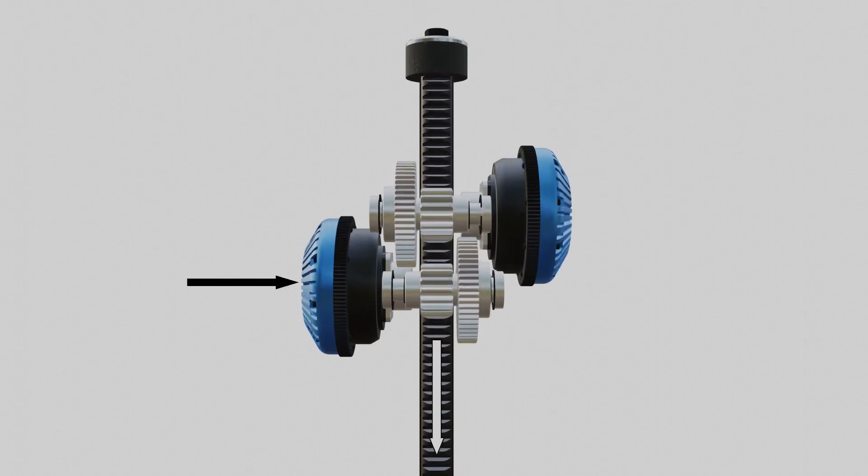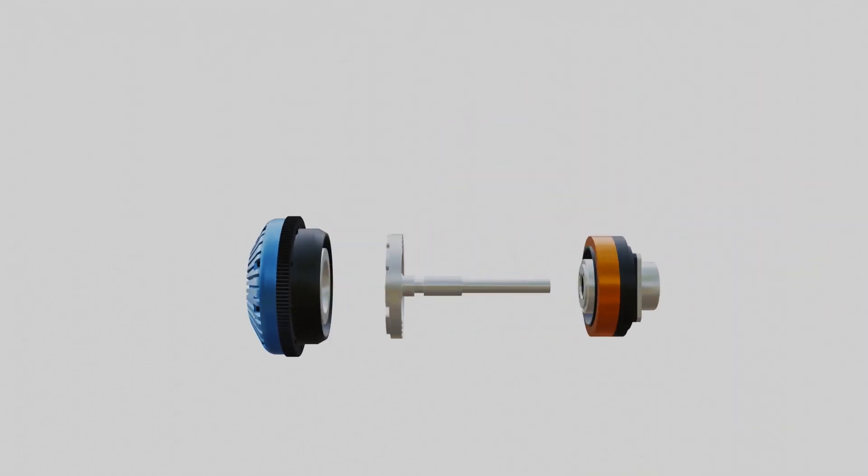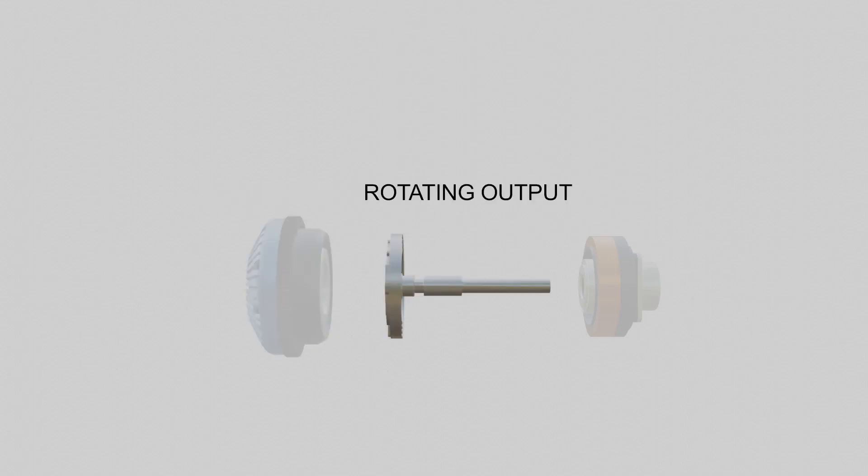Now, how does a continuous slippage clutch work? This magnetorheological clutch is composed of three subsystems: the rotating input, the rotating output, and the fixed coil holder.